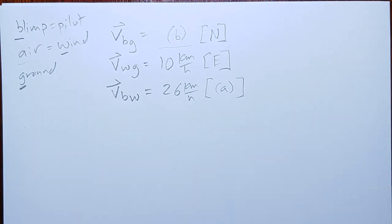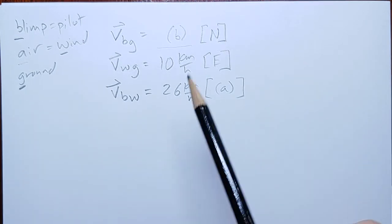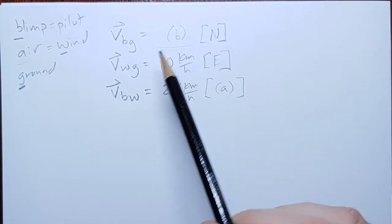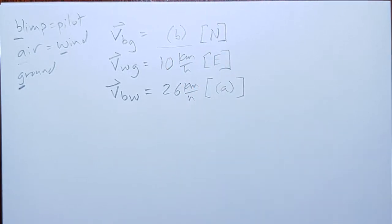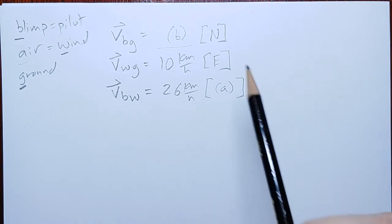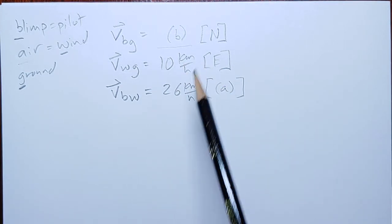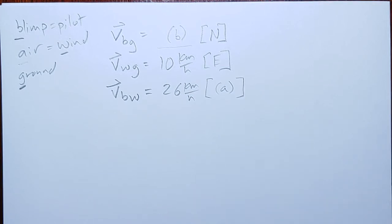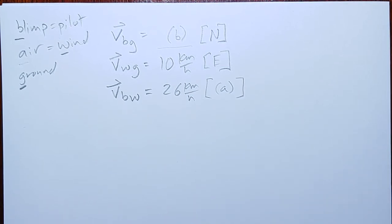Most common mistake people make on this problem is that they assign the 26 kilometers an hour to the north, and they just make a happy triangle that goes 10, 26 and makes a right triangle. That's not what happens. This is another one of those problems where we have partial information about some of our vectors. And so, if you didn't have your information set up this way, you should pause the video right now and resolve.